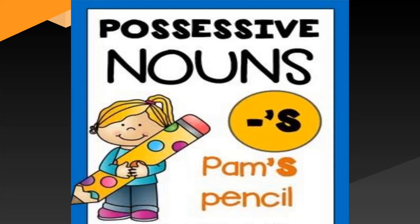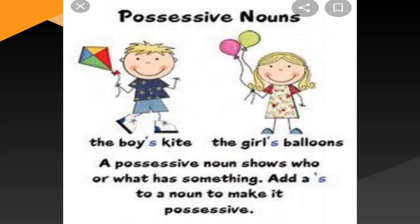Let us do the next topic: possessive nouns. Nouns that show ownership or possession are called possessive nouns. For example: the boy's kite, the girl's balloons. The possessive noun shows who or what has something. Add an apostrophe s to a noun to make it possessive. This mark — we call it apostrophe — is used to show possession.